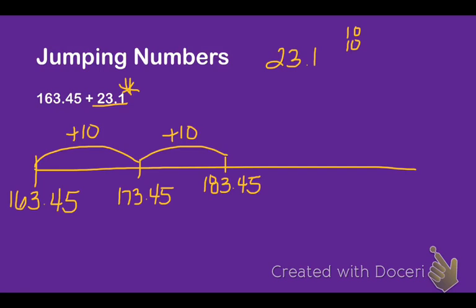So what I'm going to do is I'm going to actually jump three. So 183.45 plus three is now 186.45.